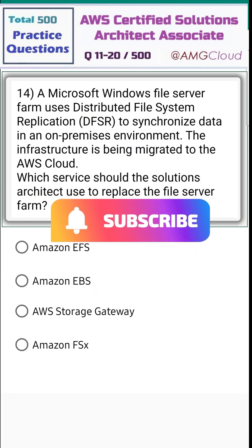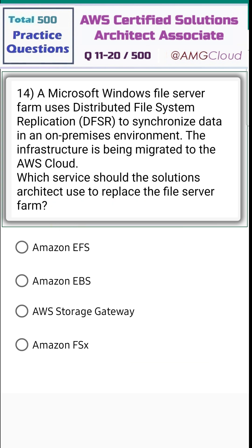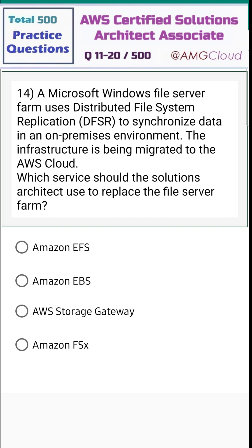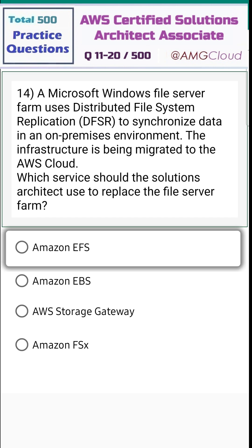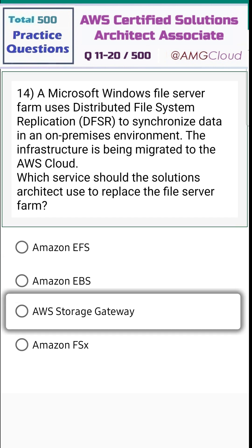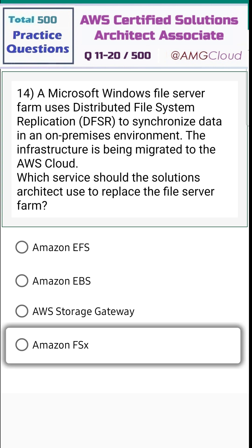Question 14. A Microsoft Windows file server farm uses Distributed File System Replication (DFSR) to synchronize data in an on-premises environment. The infrastructure has been migrated to the AWS cloud. Which service should the solutions architect use to replace the file server farm? Options: Amazon EFS, Amazon EBS, AWS Storage Gateway, and Amazon FSx.